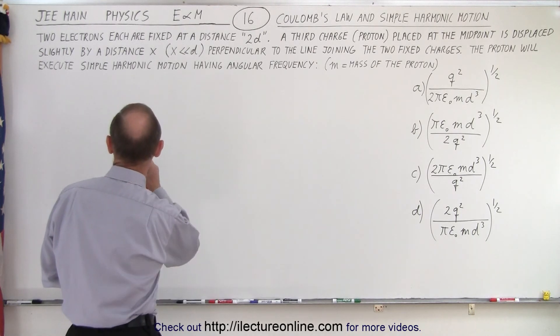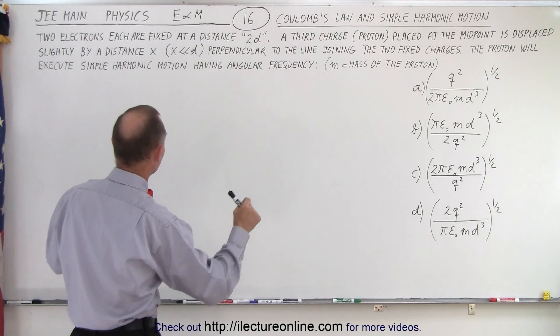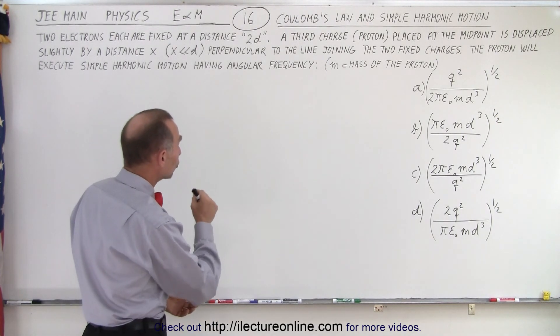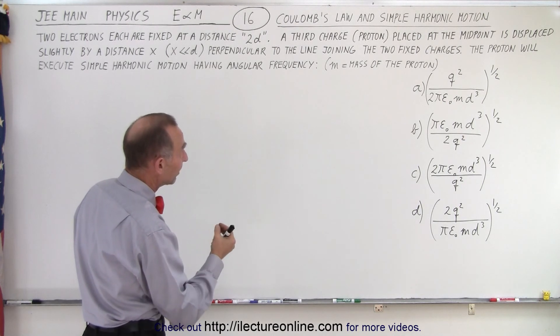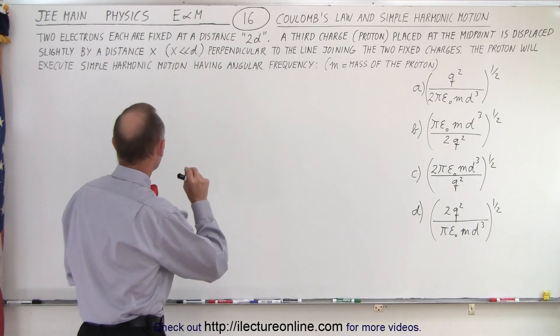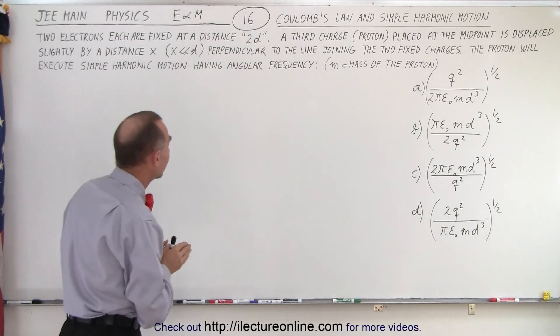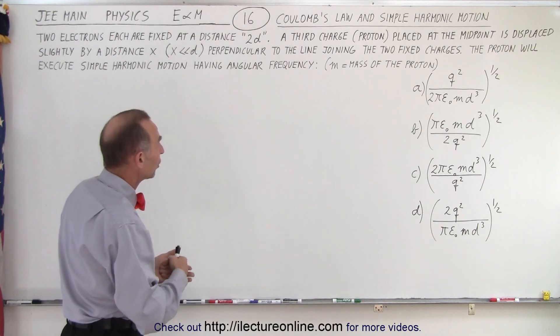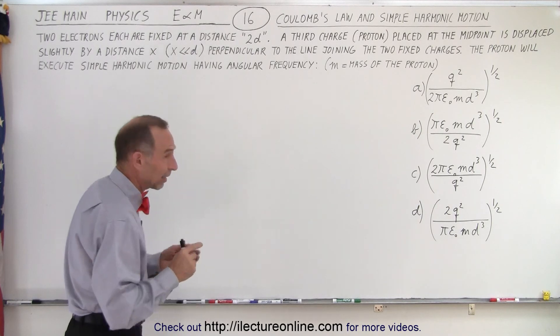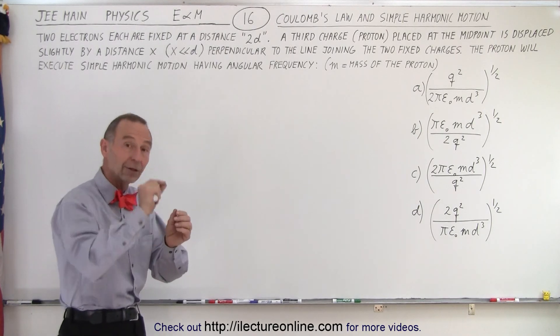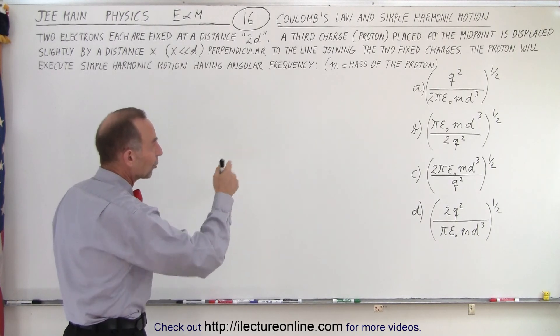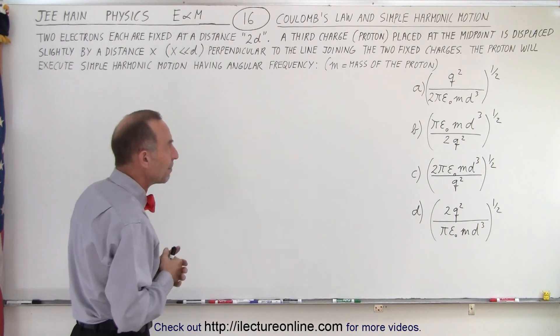Let's read the problem together. It says two electrons each are fixed at a distance 2D apart from one another. A third charge, which is a proton, is placed at the midpoint and is displaced slightly by distance X, X being much much smaller than D, perpendicular to the line joining the two fixed charges. The proton will then execute simple harmonic motion. I presume that you push it and then you let it go, it'll go back and forth like that, having an angular frequency of one of those four choices with M being the mass of the proton.